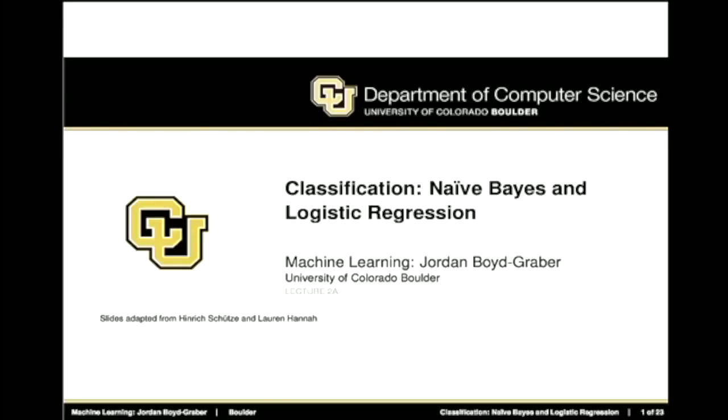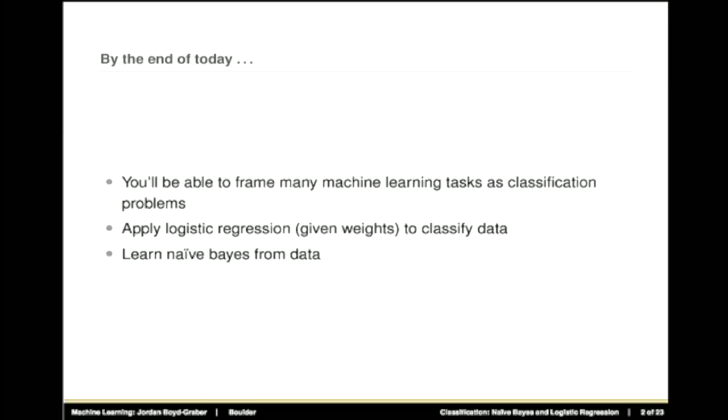Today we're going to be talking about naive Bayes and logistic regression, two examples of supervised classification techniques. By the end of the day, you'll be able to frame many machine learning tasks as classification problems, apply logistic regression to classify data, and learn how to do naive Bayes — another classification framework — end to end on real data.